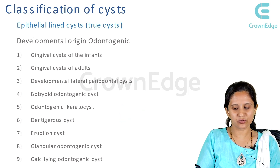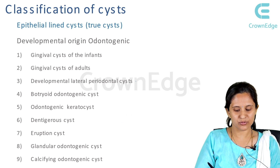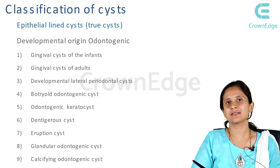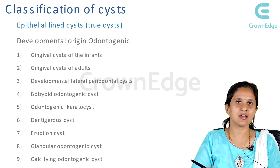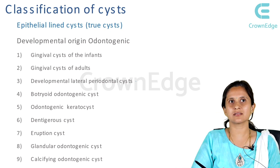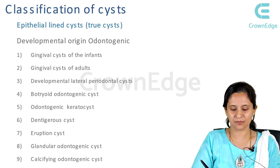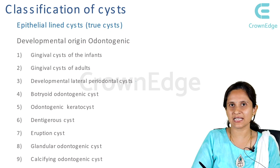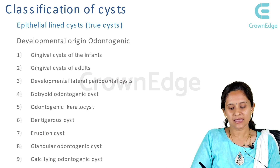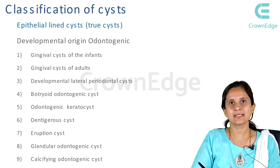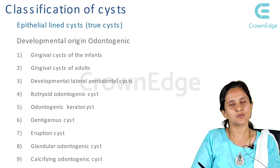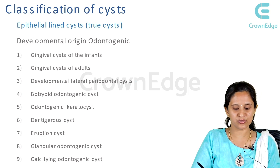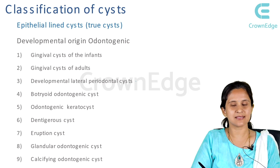Next come the glandular odontogenic cyst and calcifying odontogenic cyst. The glandular odontogenic cyst is rare and occurs most commonly in the maxillary region. It may be confused with salivary gland tumors or cysts because it is lined by mucus cells with mucus secretion — hence named glandular odontogenic cyst. The calcifying odontogenic cyst is also common in the maxillary anterior region.